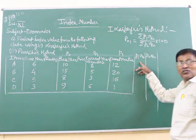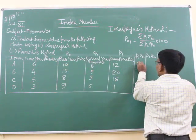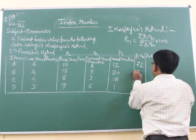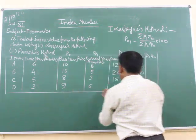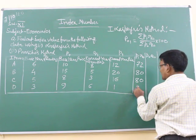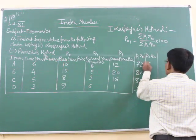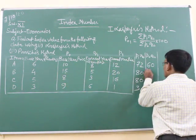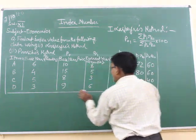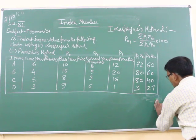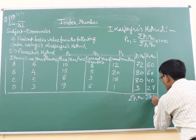Now how to find out P1Q0? By multiplying P1 with Q0. That is 12 times 6 are 72. Next one is 20 times 4 are 80. Next one is 16 times 5 are 80. And the last one is 3 times 1 is 3. We have to find out the total of P1Q0.